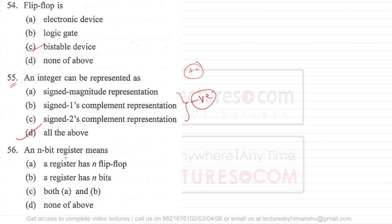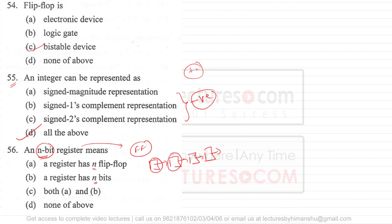Question number 56 says an n-bit register means it can have n flip-flops, and the register has n bits. Registers are made up of flip-flops, and every flip-flop stores one bit of information. So an n-bit register has n flip-flops and n bits. Option C — both A and B — is the correct answer.